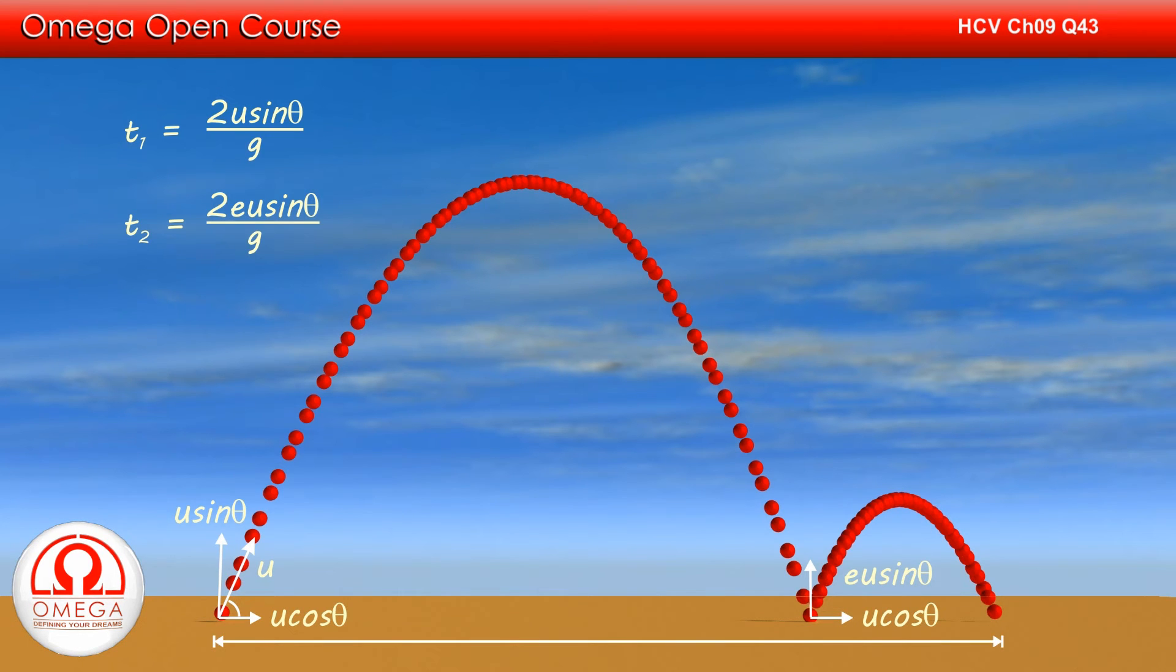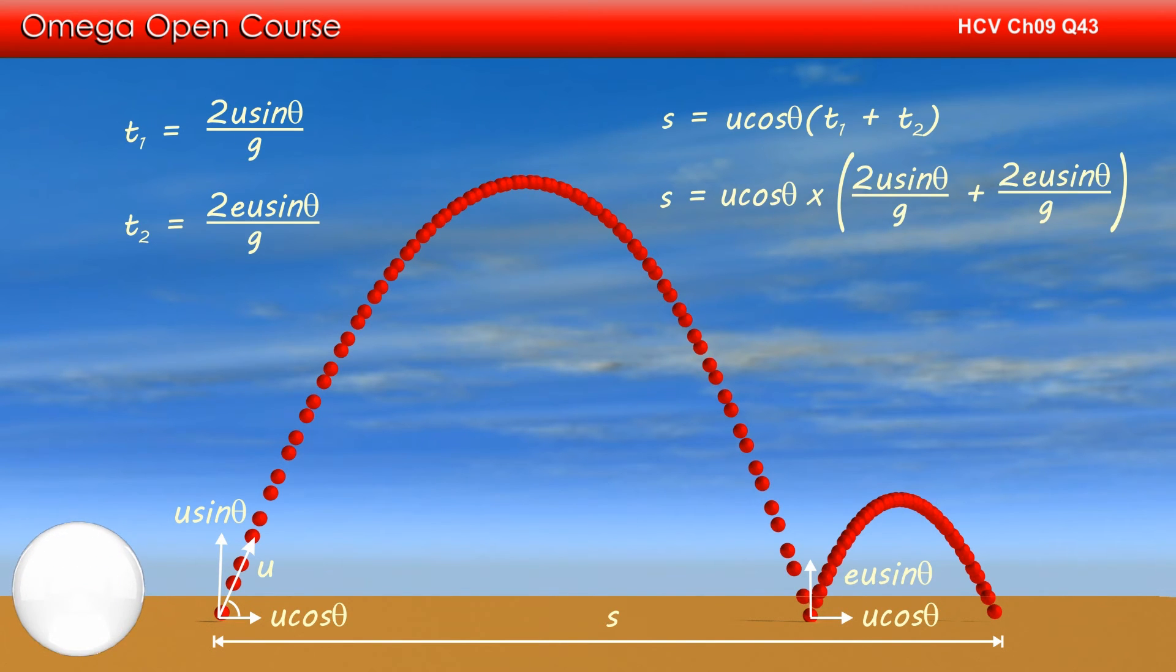Since the horizontal speed of the projectile remains constant throughout the motion, the total horizontal distance travelled by the projectile is equal to the horizontal speed into time taken, that is u cos theta into t1 plus t2. Putting the values of t1 and t2, we get s is equal to u cos theta into 2u sin theta divided by g plus 2e u sin theta divided by g.